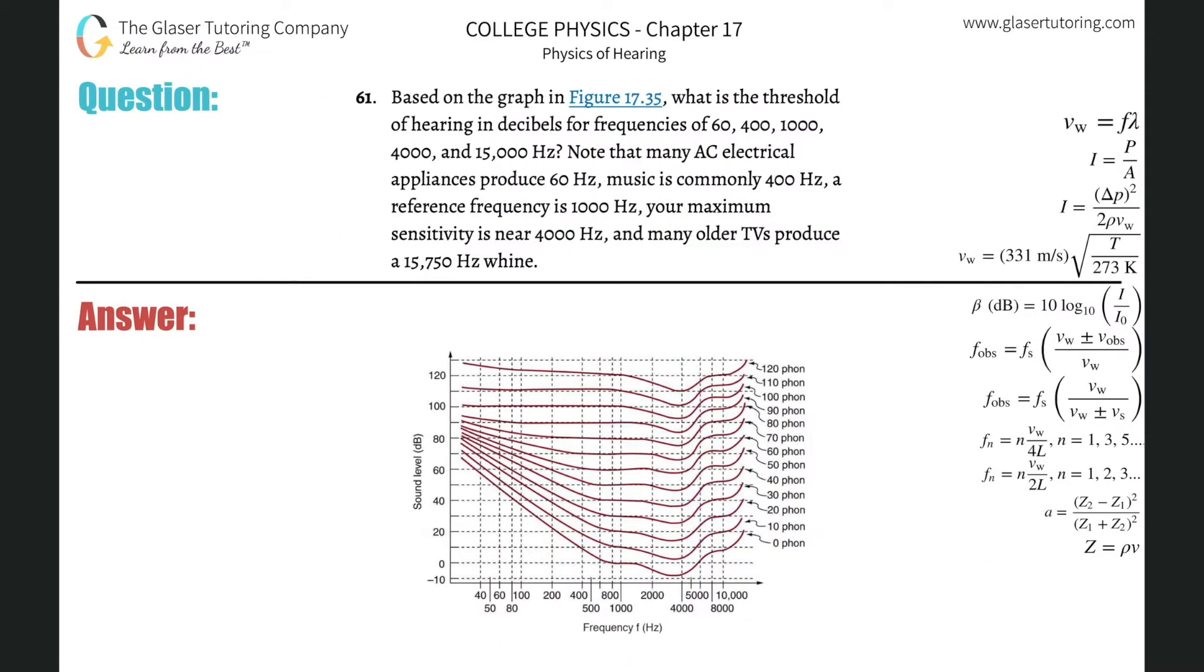Number 61, based on the graph in Figure 17.35, what is the threshold of hearing in decibels for frequencies of 60, 400, 1000, 4000, and 15,000 Hz? This line here that I'm going to outline in black on the graph represents the threshold of hearing, the zero phone value. All you have to do is highlight the areas at each frequency.